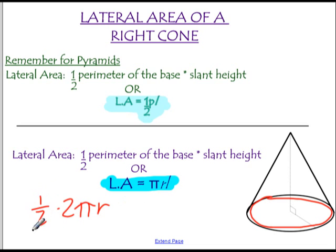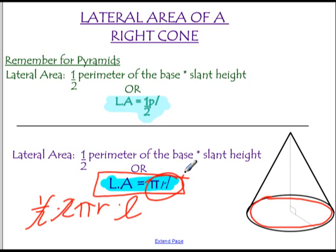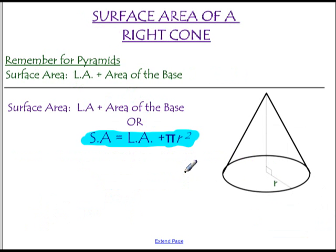So 1/2, perimeter of the base, times the slant height. But what's 1/2 times 2? Well, half of 2 is 1, so that's just 1, and that just cancels out because that's just 1πrl, which is why this formula is what it is. So I'll give you this formula. Lateral area is πrl, but I think it's helpful to know why it looks like that and where the 1/2 went. That's where it went.